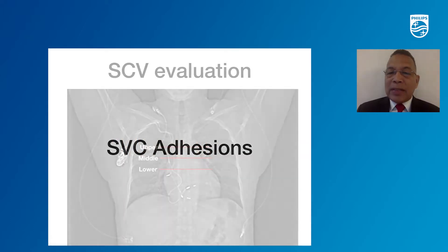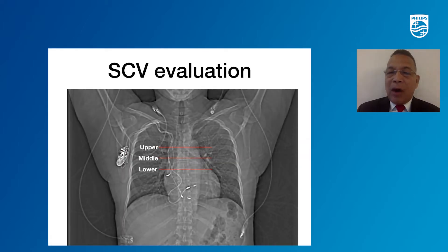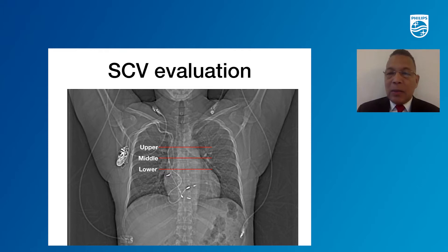We also use CT to see if there are adhesions to the superior vena cava. For that, we evaluate the CT scan in the upper, middle, and lower part of the SVC. If the leads are floating in the superior vena cava, we determine there are no adhesions. If the leads are embedded in the wall of the superior vena cava, we interpret that as severe adhesions.